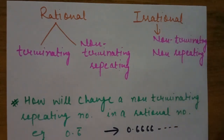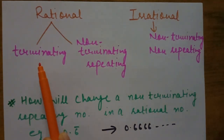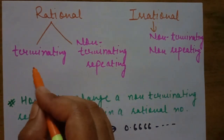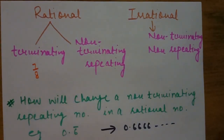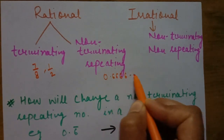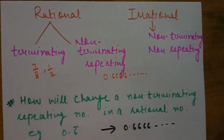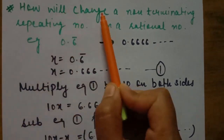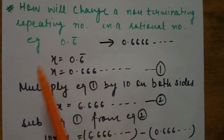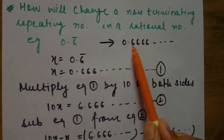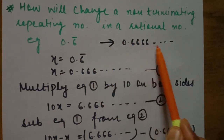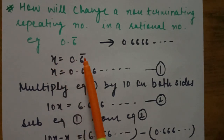Some students may wonder: terminating numbers are clearly rational, like 7/8 or 1/2, but what about non-terminating repeating terms like 0.6666...? How can they be rational? Our next topic is how to convert these non-terminating repeating numbers into a rational number. First example: 0.6̄.